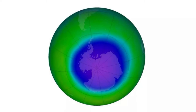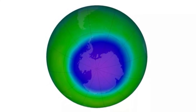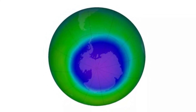But scientists aren't too concerned — the overall trend is improvement. It's a little worse this year because it was a little colder this year. A cold stratosphere is exactly what chemicals like chlorine need to break down ozone. During Antarctica's winter, the stratosphere gets cold enough for clouds to form. The ice crystals that make up those clouds provide a surface on which chlorine, for instance, can react with ozone.